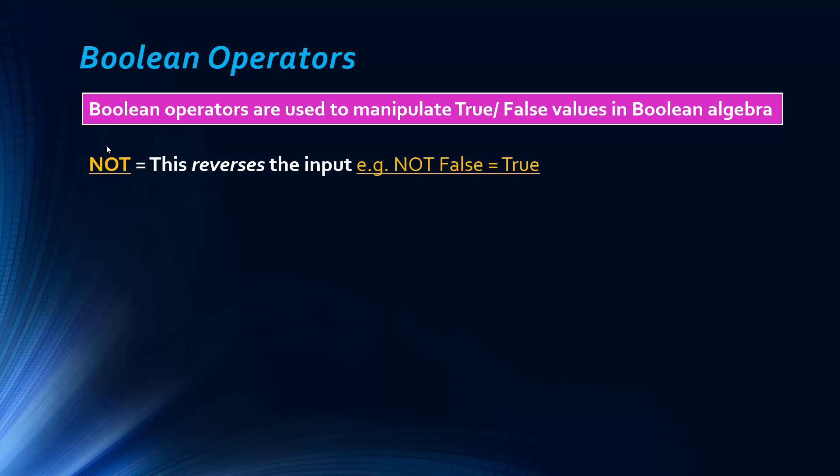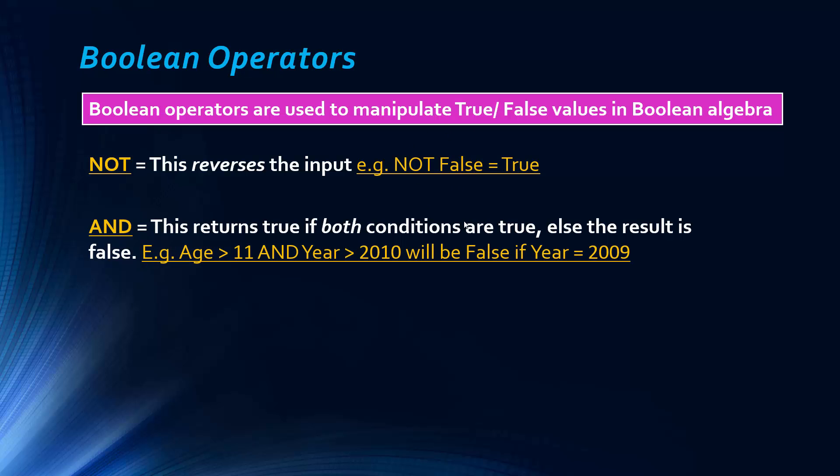So NOT is probably the simplest. It just reverses the input. So if we have NOT false, we get true. It just does the opposite. So it's flipping between true or false, depending on what is used after the operator. So if it's NOT true, we get false. There's only really two options.